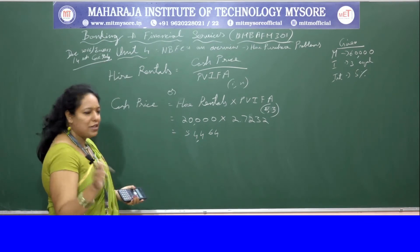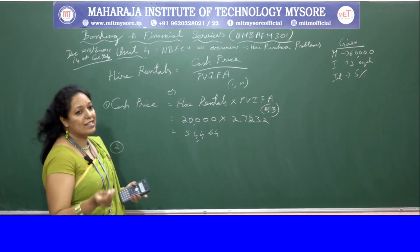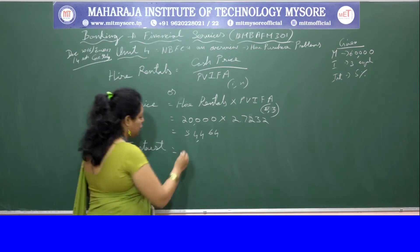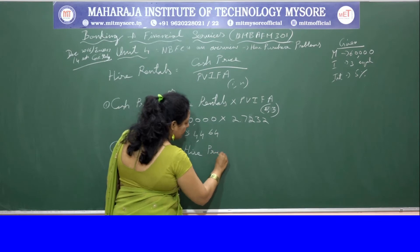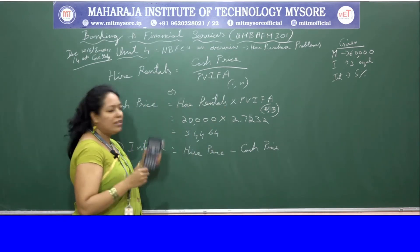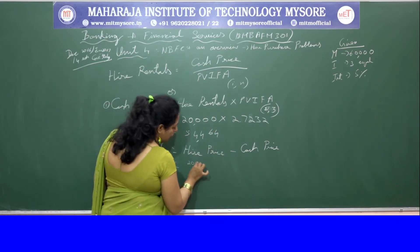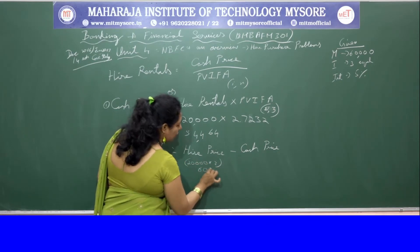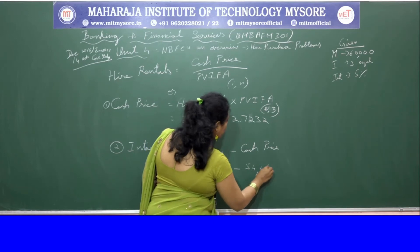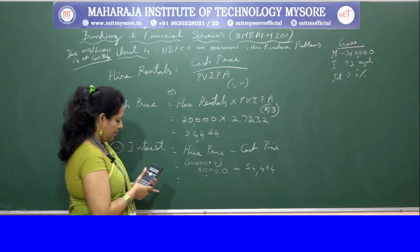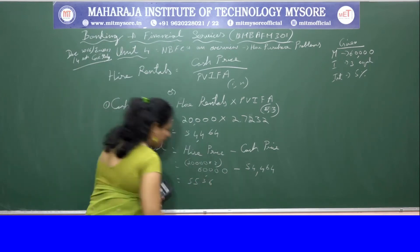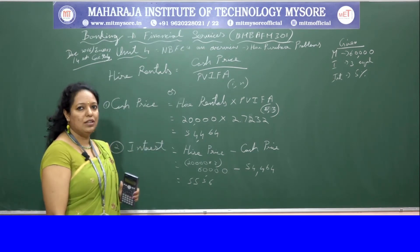They have asked two things: one is the cash price, which is 54,464. The second one they have asked is interest. Calculating interest is very easy — the formula is higher price minus cash price. So higher price is 60,000 minus cash price 54,464, and your answer is 5,536. This is the answer for the first question in the question paper.